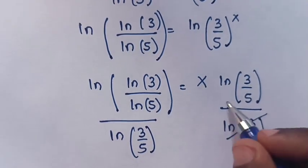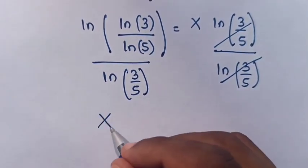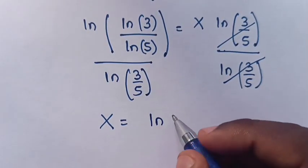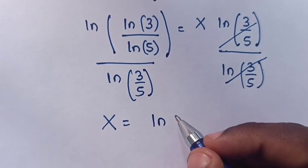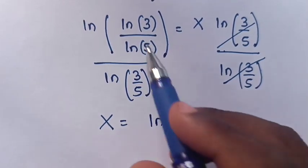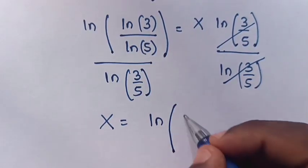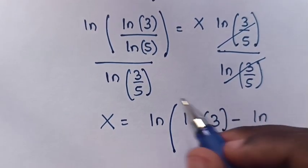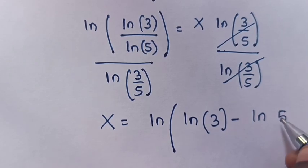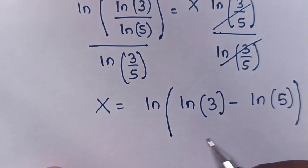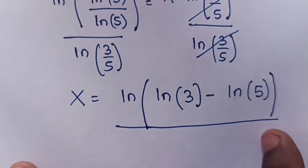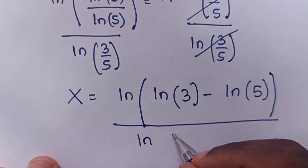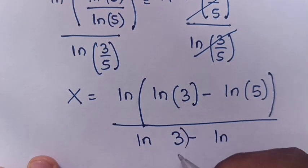So log(3/5) will cancel, and x is equal to — since we have a division — log(log(3) minus log(5)) over log(3/5), which is log(3) minus log(5).